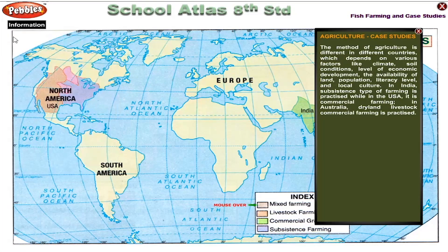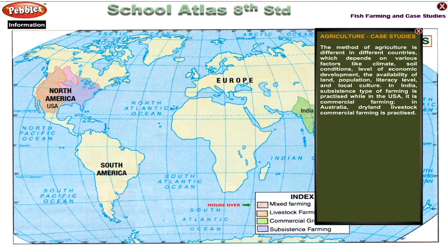Agriculture Case Studies. The method of agriculture is different in different countries, which depends on various factors like climate, soil conditions, level of economic development, the availability of land, population, literacy level and local culture. In India, subsistence type of farming is practiced, while in the USA, it is commercial farming.